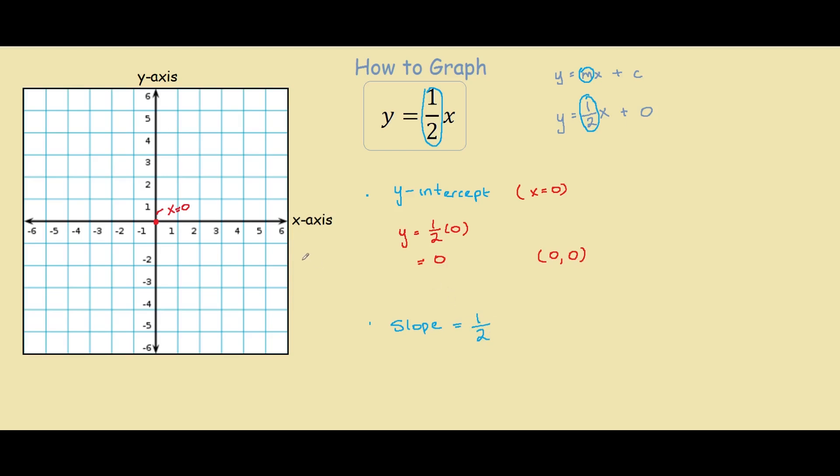What our slope tells us is that for every single one unit horizontal we go, we go up one half. So if we go two units horizontal, we should go up by one because we're only going up by half each time.